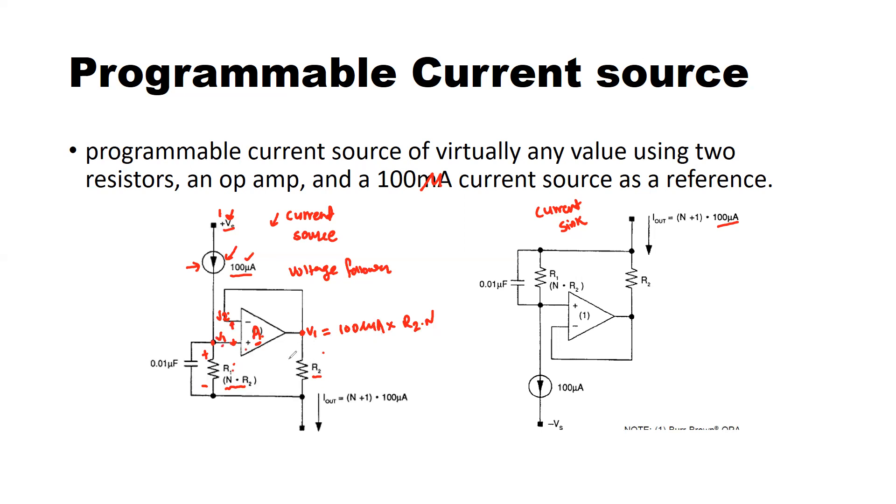Now this current is flowing through the R2 and that is your I out which is an output current. So if you connect another load here, that current is going to flow through the load. That's why it will act as a current source as I said in the beginning.